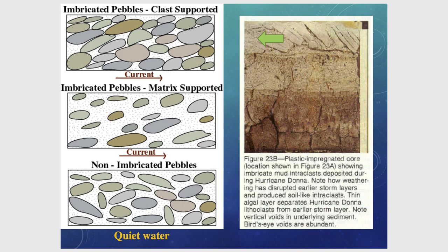The slope of the clasts tips in the opposite direction with respect to the current. Matrix-supported examples show no clast touching, and imbricated pebbles in a relatively quiet environment lose systematic orientation — more randomness in orientation can indicate you are at the end of an estuary where currents are less pronounced and water flows at a much slower velocity.